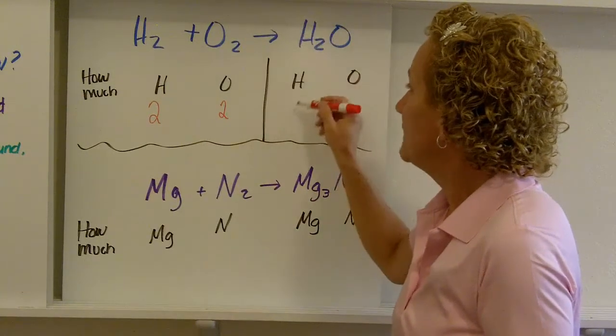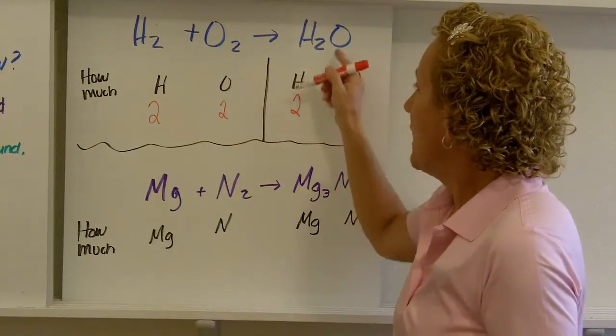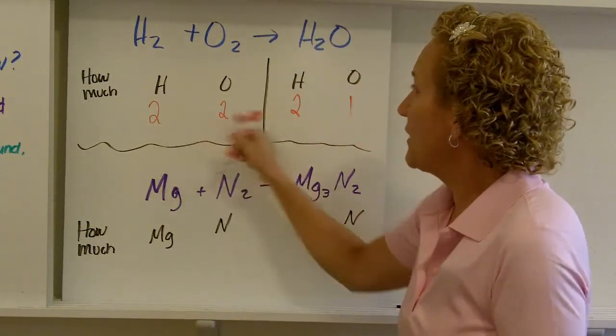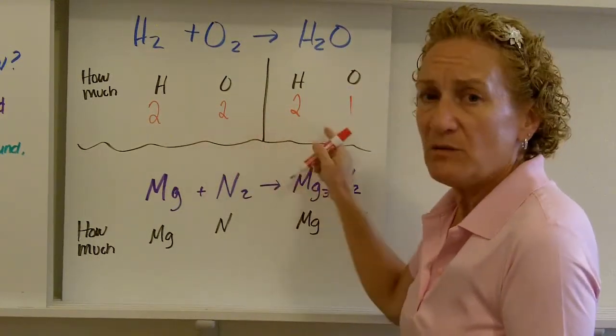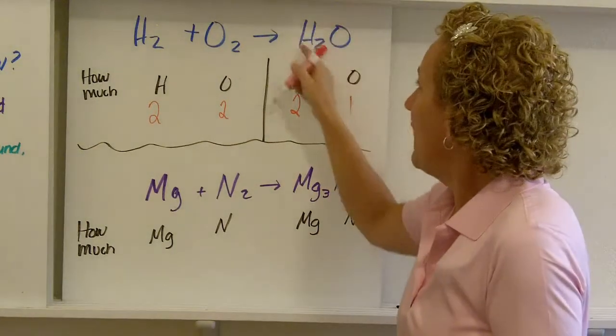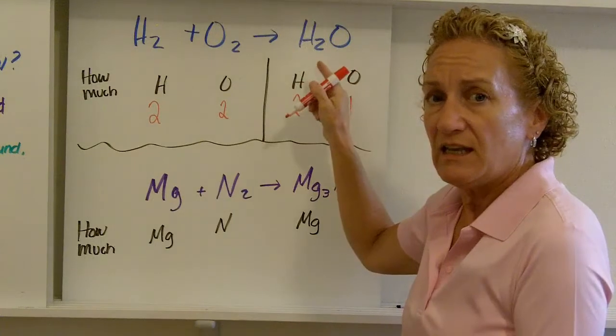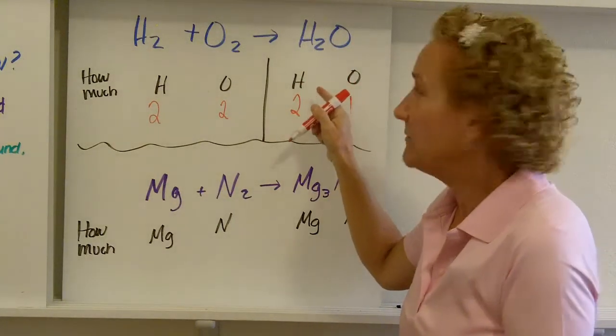How much hydrogen do I have on this side? I have two. How much oxygen do I have on this side? I only have one. Well, you can see that I have the same amount of hydrogen on both sides, but different amount of oxygens. So I have to change something here in order to get two atoms of oxygen.